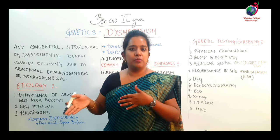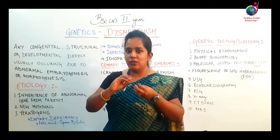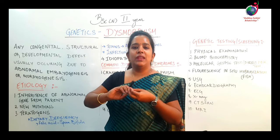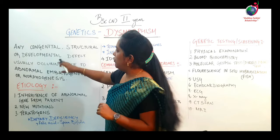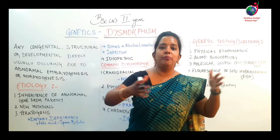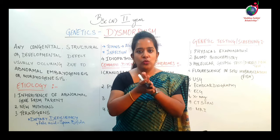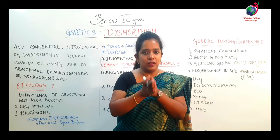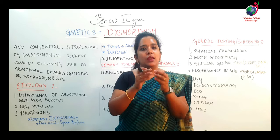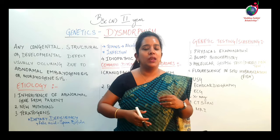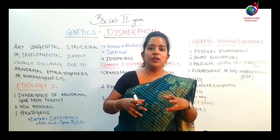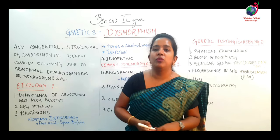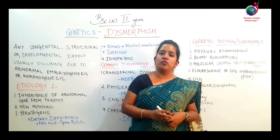Structural dysmorphism is also possible. Anything that has grown in an abnormal way is not normal in shape. Or a developmental defect is not happening. These two things are related to physical appearance — either the structure is abnormal, or the abnormality exists because something has not developed. Usually it is due to abnormal embryogenesis or morphogenesis.